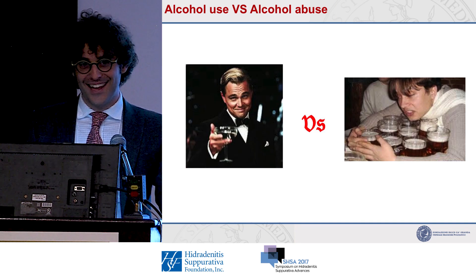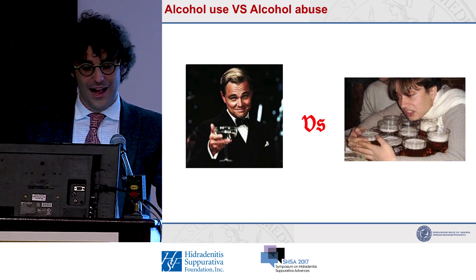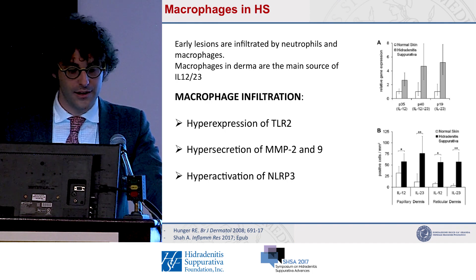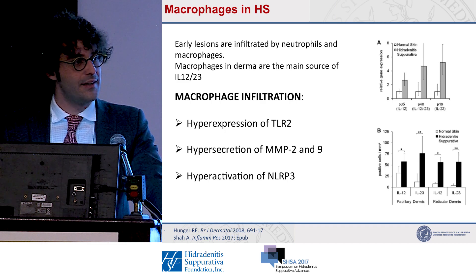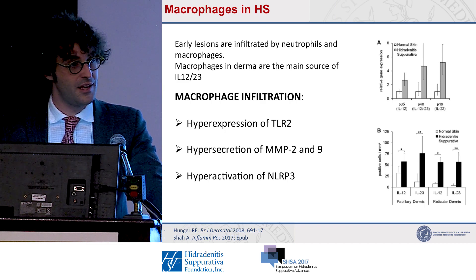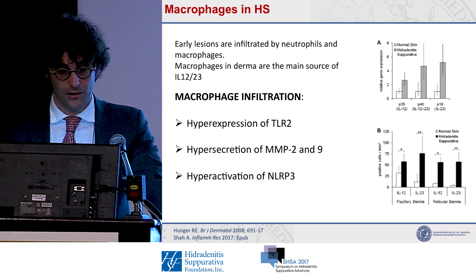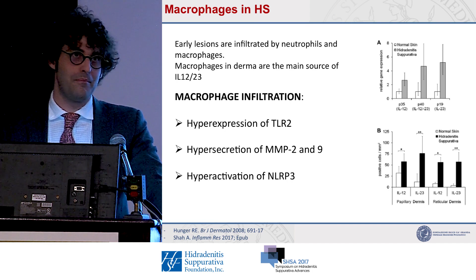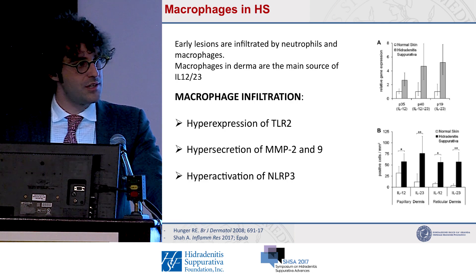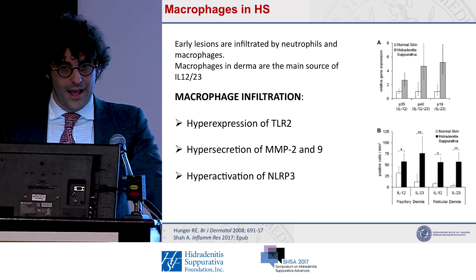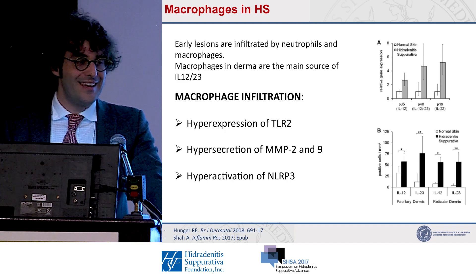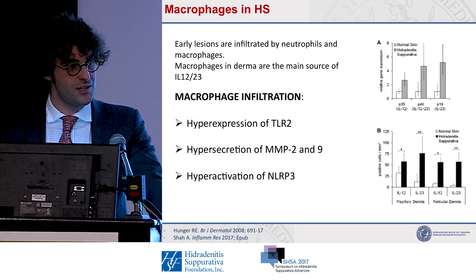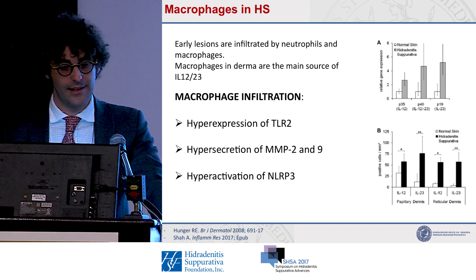In this background, we look at the role of macrophages in HS. In the literature, early lesions are infiltrated by neutrophils and macrophages, as the team of Van Der Zee described a few years ago. At the same time, macrophages — especially the papillary infiltrate — are the main sources of interleukin-12 and interleukin-23, which have a key role in the polarization of Th17 lymphocytes that represent an immunological bridge between innate and adaptive immunity.